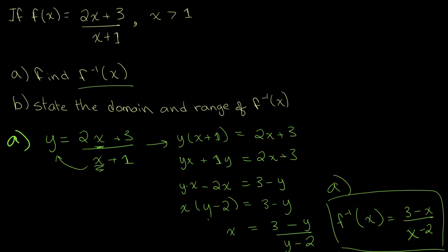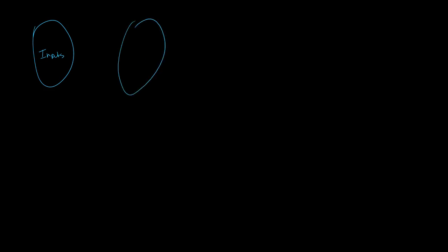Now let's solve for part b. Part b asks us to state the domain and range of f inverse of x. To answer this question we have to revisit what an inverse function is. We have all the inputs of our function on one side and all the outputs on the other. The domain is the set of all inputs and the range is the set of all outputs.